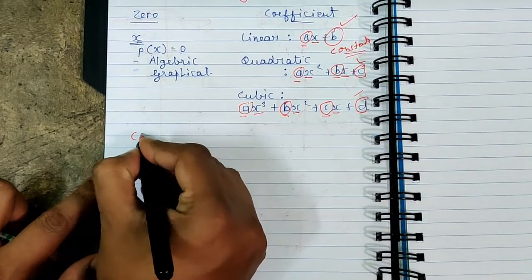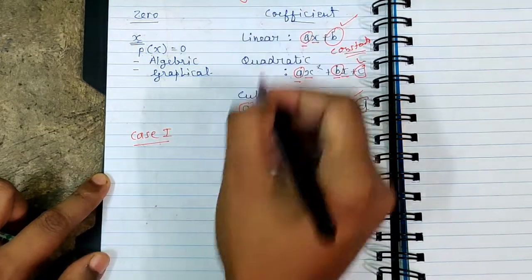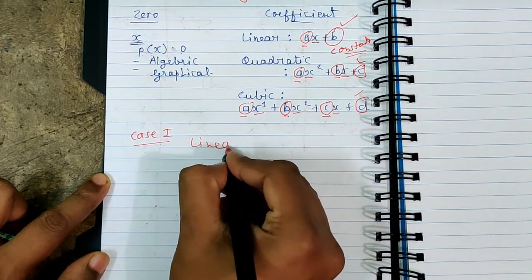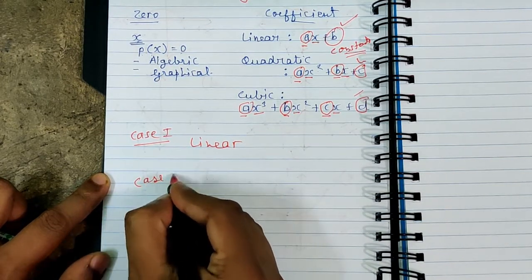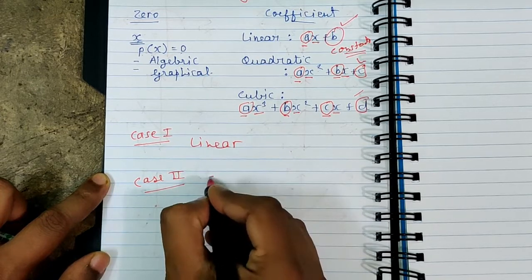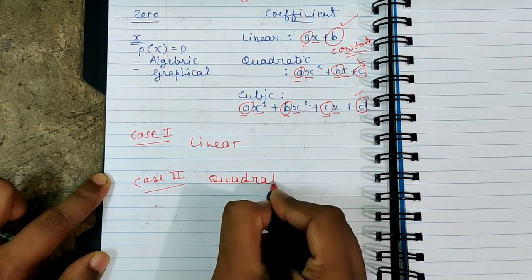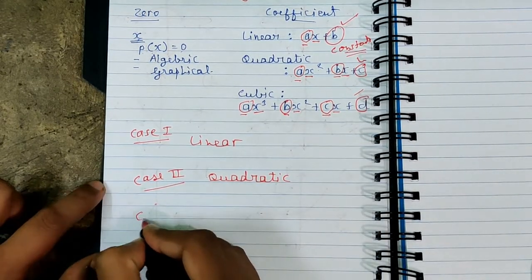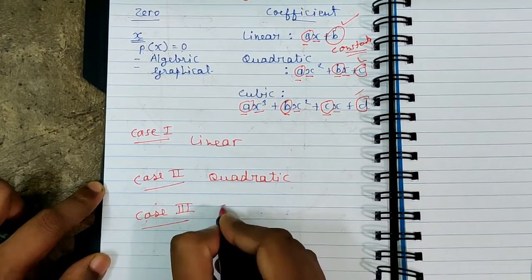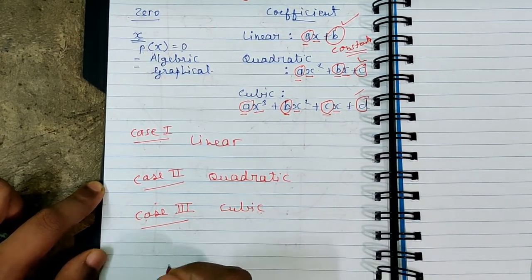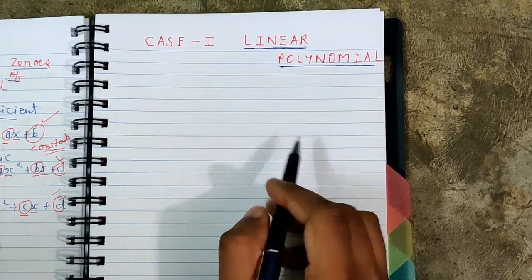Today's class will be divided into three major parts. Case one: relation between zeros and coefficients for a linear polynomial. Case two will cover the quadratic polynomial, and case three will cover the cubic polynomial.